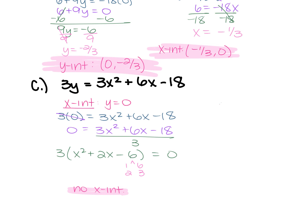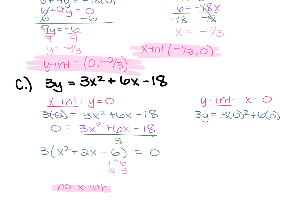Finding the y-intercept by plugging in 0 for x: 3y = 3 times 0 squared + 6 times 0 - 18. The terms with 0 all cancel out, leaving 3y = -18. Divide each side by 3 to get y = -6. This gives the ordered pair (0, -6) for the y-intercept.